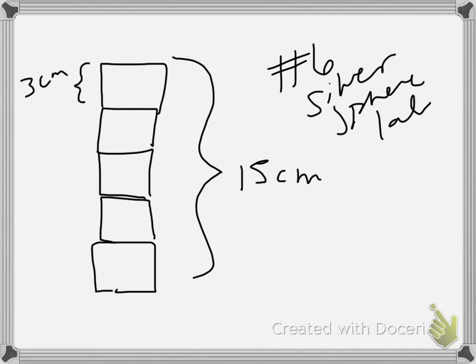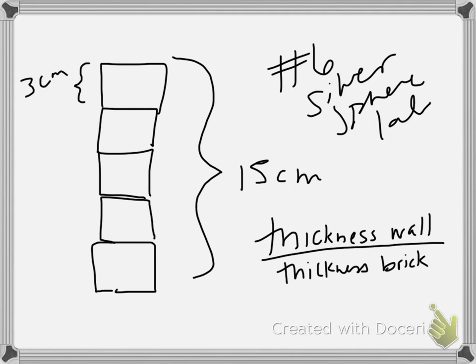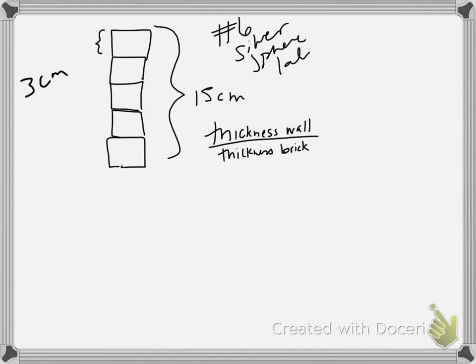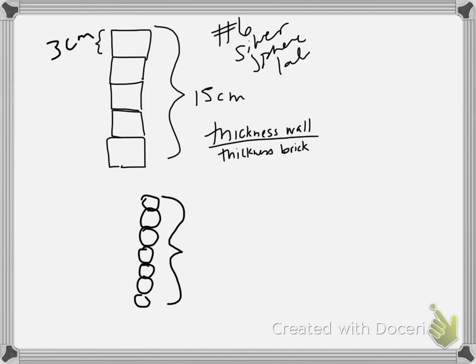Of course you can — that's easy enough. Now what if I have a layer of silver composed of silver atoms? And I know the thickness of the layer, and I know the diameter of each atom. Can I figure out how many silver atoms thick that is?